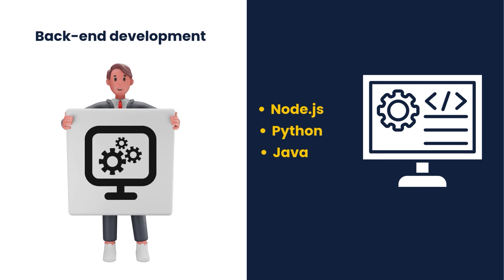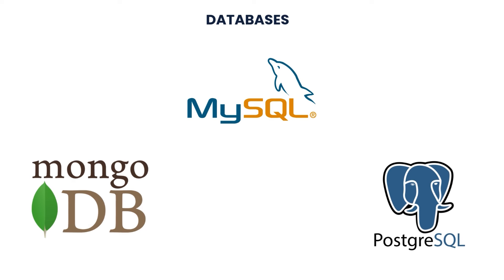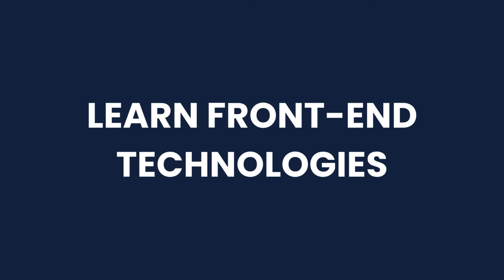Back-end development deals with server-side logic, databases, and application functionality behind the scenes. It ensures data is correctly stored, retrieved, and processed. Key technologies include Node.js, Python, Java, and frameworks like Express, Django, and Spring, along with databases such as MySQL, MongoDB, and PostgreSQL.